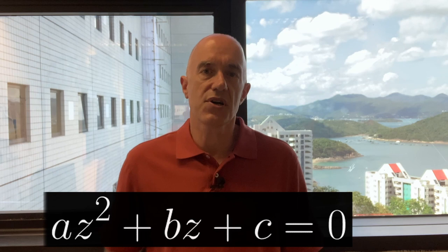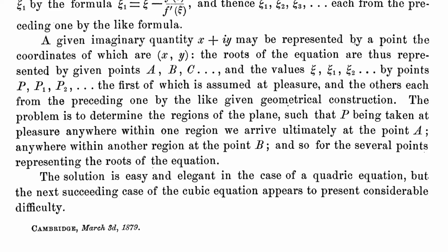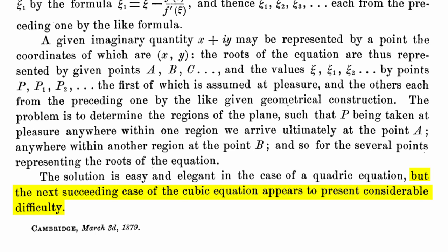Newton's method requires an initial guess for the root, and since a function may have more than one root, Professor Cayley wanted to know which initial guesses converge to which roots. He found a solution for the quadratic equation but could not find any solution for the cubic equation. The last sentence of his one-page paper is a classic English understatement: the solution is easy and elegant in the case of a quadratic equation, but the next succeeding case of the cubic equation appears to present considerable difficulty.